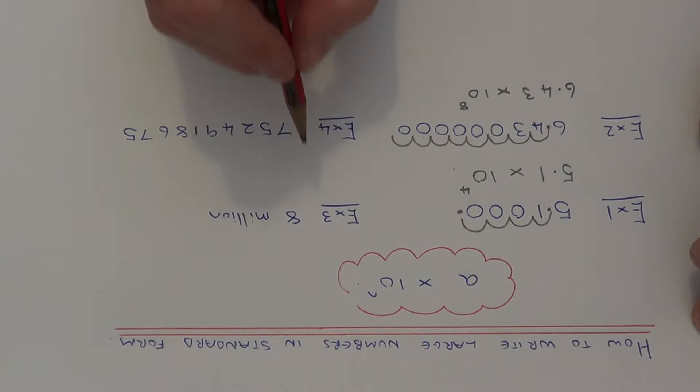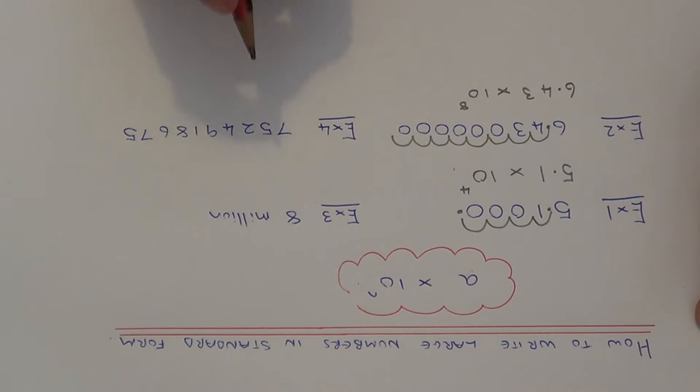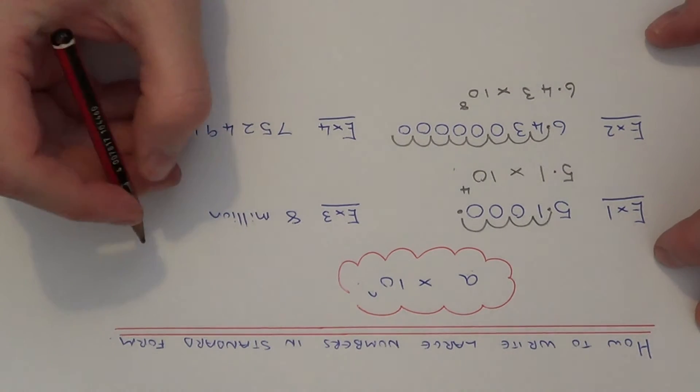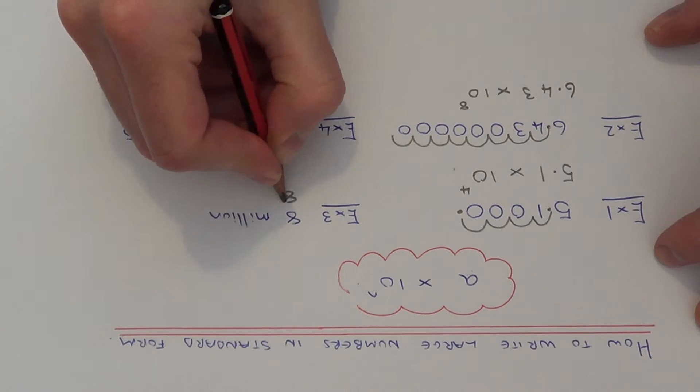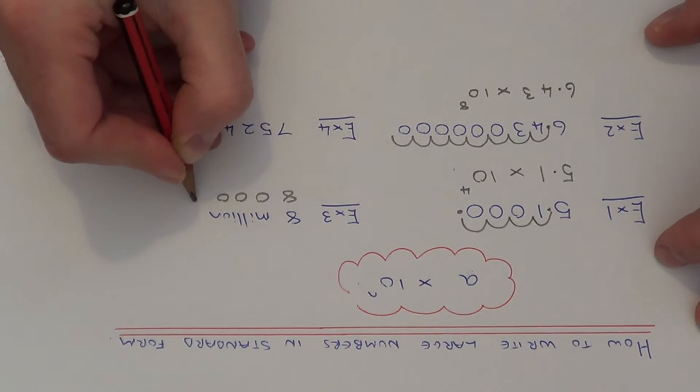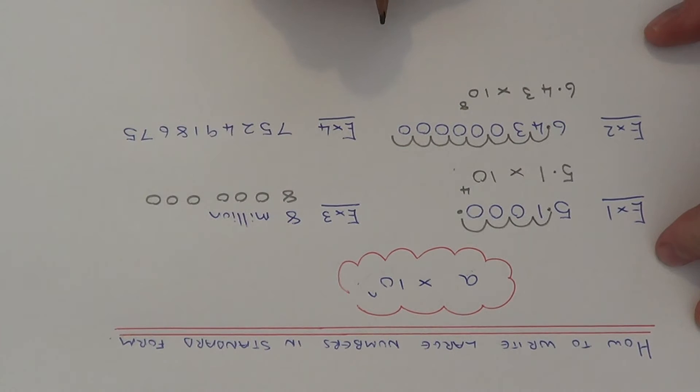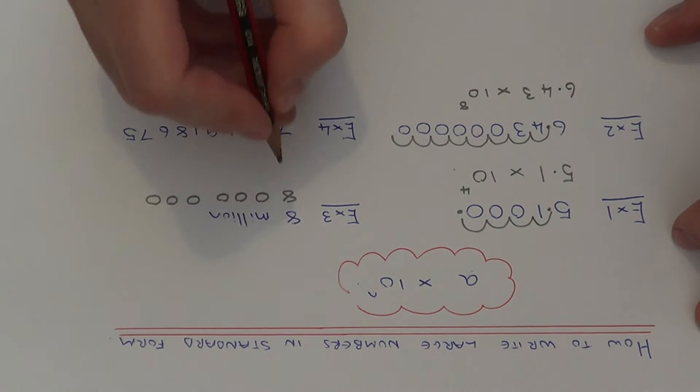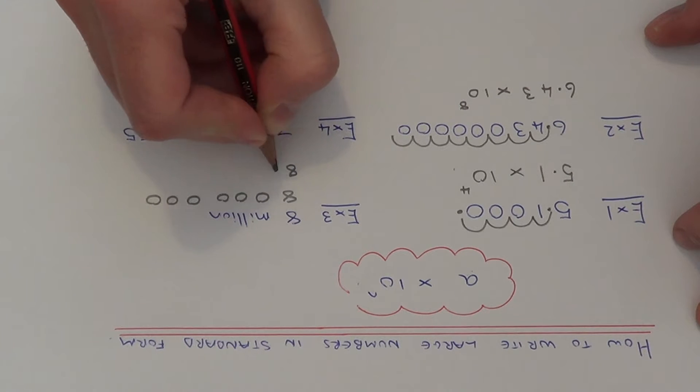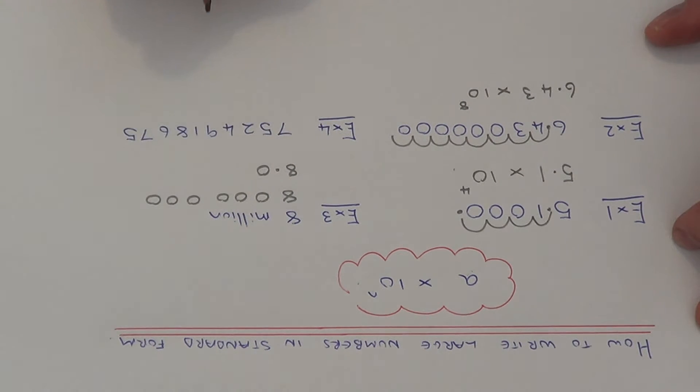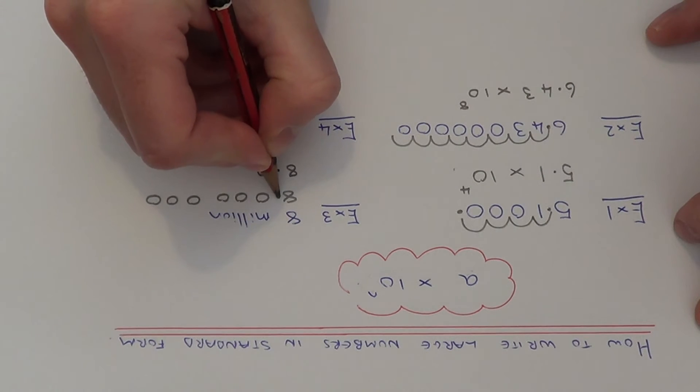So let's move on to example 3. So this time we've got to write down 8 million in standard form. So 8 million is 8, followed by 6 zeros. So again, what we need to do is make the first number between 1 and 10. So we're going to write that as 8.0. You could just put 8 if you wanted to.